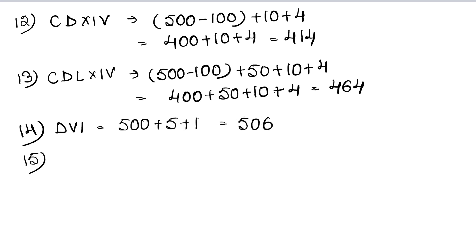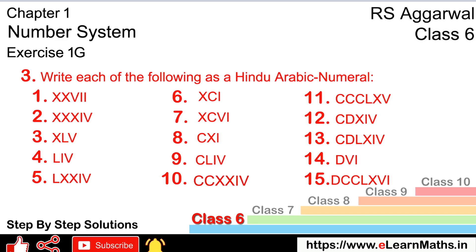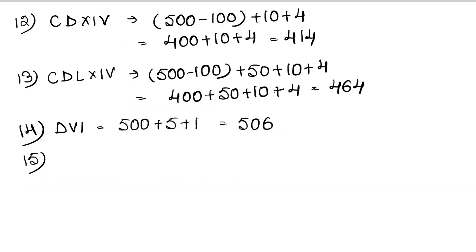Fifteenth part, last part, is DCCLXVI. D is 500, CC is 100 plus 100, L is 50, X is 10, V is 5, and I is 1. So 500 plus 100 is 600, 700, 750, 760, 765, 766 is the answer.